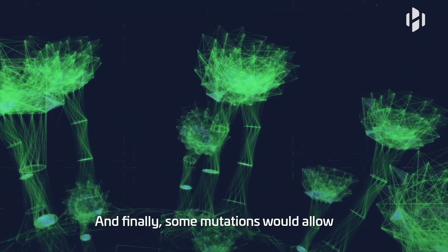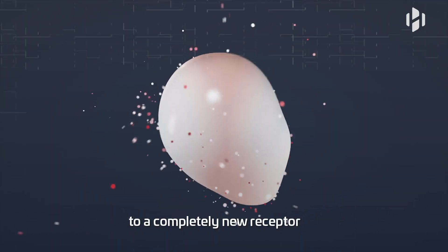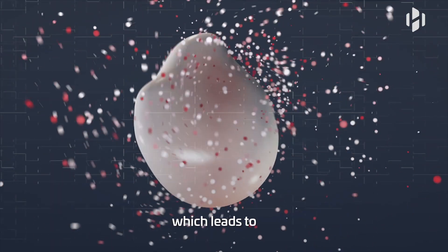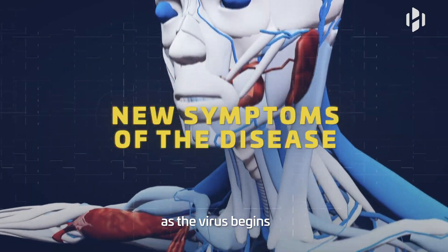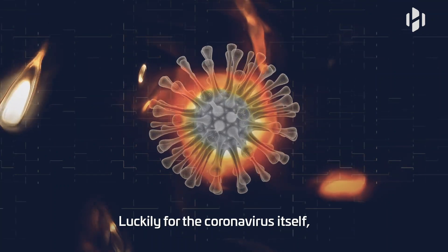And finally, some mutations would allow the spike protein to bind to a completely new receptor on a totally different cell, which leads to new symptoms of the disease as the virus begins targeting new tissues.